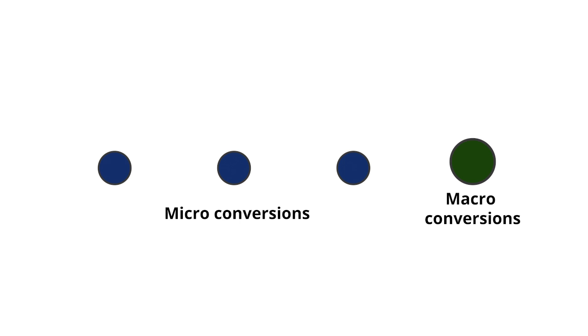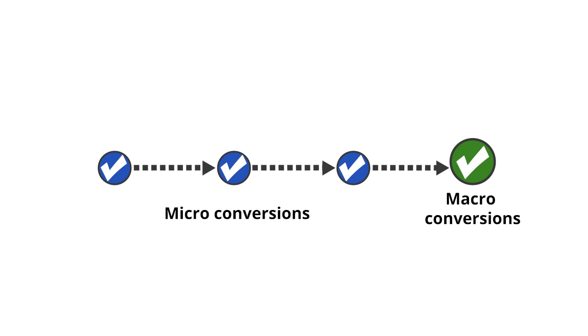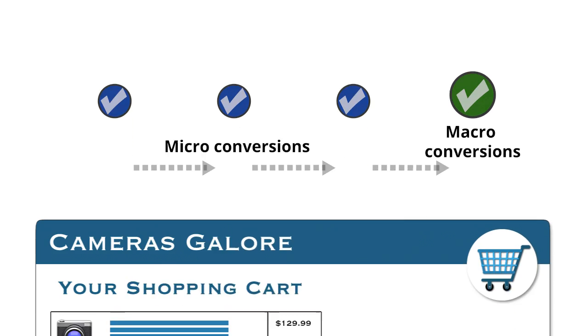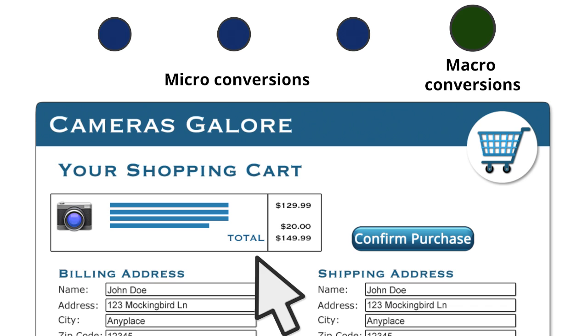In this lesson, we're going to discuss two important concepts used to measure the customer journey – conversions and conversion attribution. One of the most important concepts in digital analytics is the idea of macro and micro conversions. A macro conversion occurs when someone completes an action that's important to your business. For example, if you're an e-commerce company, the most important macro conversion is usually a transaction.